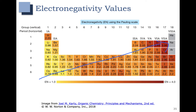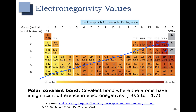So how does electronegativity affect bonding? A polar covalent bond is a covalent bond where the atoms have a significant difference in electronegativity. Remember that a covalent bond involves electrons being shared, so hydrogen-hydrogen would be a non-polar covalent bond, and a carbon-carbon bond is also considered non-polar covalent. We're looking for a difference of 0.5 to 1.7 for polar covalent.